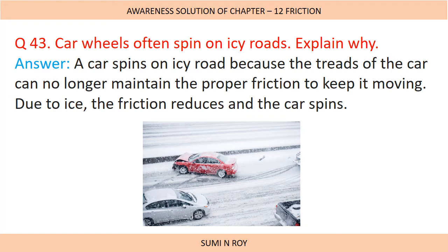Next question: Car wheels often spin on icy roads — explain why. A car spins on an icy road because the treads of the car can no longer maintain the proper friction to keep it moving. Due to ice, friction reduces and the car spins. Ice is a very smooth surface, so friction is very less. On a smooth surface, the tires of the car cannot make a proper grip, so they start spinning.